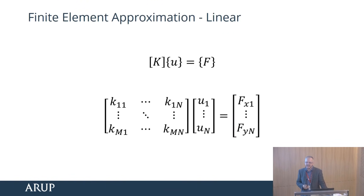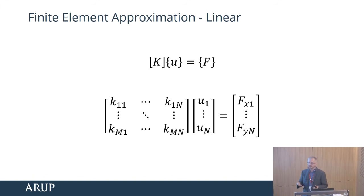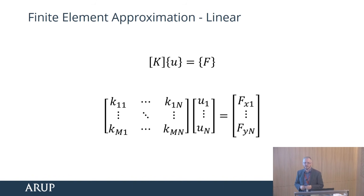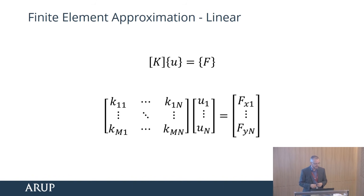Static linear analysis very typically uses the stiffness matrix method. Essentially, this is a series of simultaneous equations which the program is solving to find the answer. The K is the stiffness matrix of the model, U is the movement of all the nodes in the structure, and F is the matrix of the external forces. If this is a statically indeterminate structure, this is an approximate solution — there is no definite answer. But in terms of maths, that is as far as I'm going to go in today's talk.